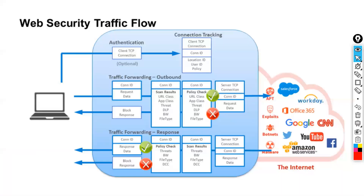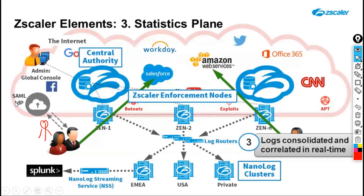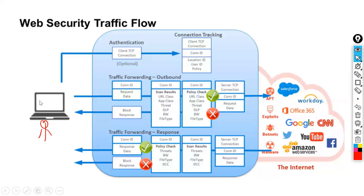Today we discuss ZScaler traffic flow — the web security traffic flow. Think of yourself as a user with a laptop. The very first step is that the user must authenticate themselves. Authentication is the first parameter; without it, nothing can proceed. Authentication can happen via SAML, for example. If the user is not authenticated, no traffic is allowed — this is the first criteria.